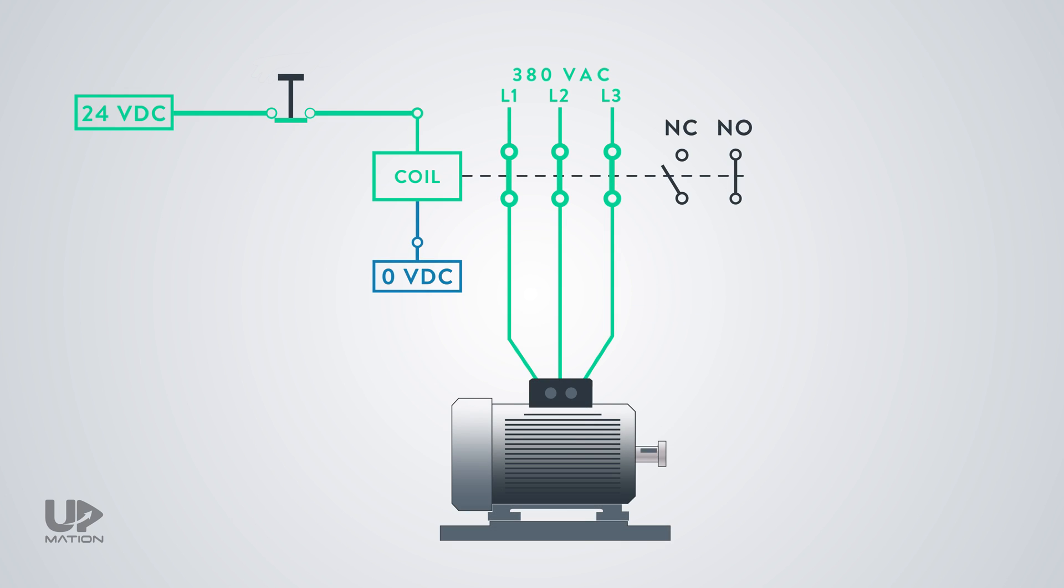As we mentioned at the beginning of this video, stop push buttons always considered as normally closed contacts. When we activate them, they'll open the power circuit and the process will stop immediately. So why normally closed contacts?